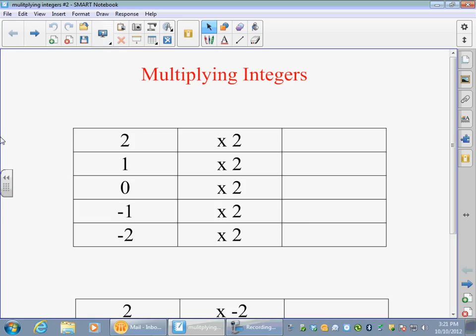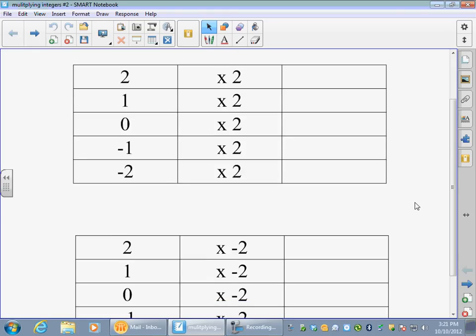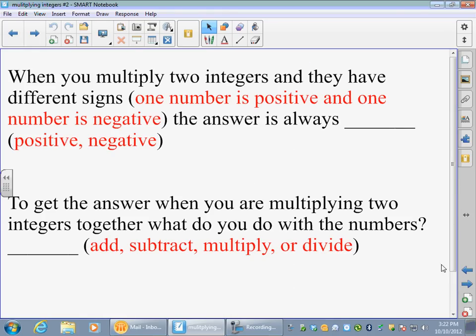Today we're going to go over more multiplying integers. We're going to focus on what you do when the numbers have different signs. We're going to start the same way we did yesterday. We're going to look at these same two charts and use these to help us come up with the answer to these two questions.